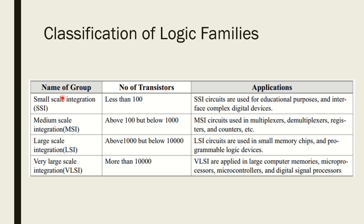Logic families are classified according to scale of integration: small scale integration, medium scale integration, large scale integration, and very large scale integration. In small scale integration, less than 100 transistors are used, and these are used for educational purposes and interfacing complex digital devices. If the number of transistors is above 100 to 2000, these are used for medium scale integration — for mux, demux, register counters, etc. For large scale integration, between 1000 and 10,000 transistors are used for small memory chips and programmable logic devices. For VLSI, more than 10,000 transistors are used, and applications include large computer memories, microcontrollers, and digital signal processors.